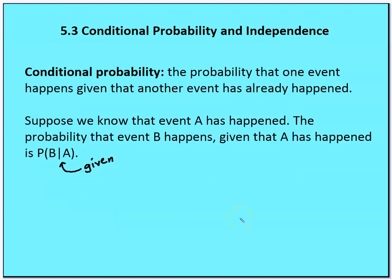Conditional probability is the probability that one event happens given that another event has already happened. So suppose we know event A has happened — then the probability that B happens given A is written as P(B|A). For example, if it rained this morning, what's the probability that the quad is wet at 11 a.m.? That probability is different than if it didn't rain, because without rain it's unlikely the quad is wet unless someone sprayed it. So conditional probability frames events in context of something that previously happened.